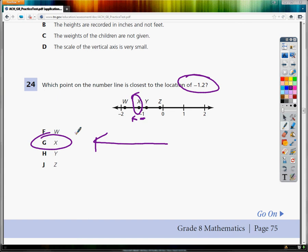And Z is just kind of there as maybe you forget about the whole 1 thing and just think, oh, it's negative 0.2. So the answer to number 24 is G. Thank you.